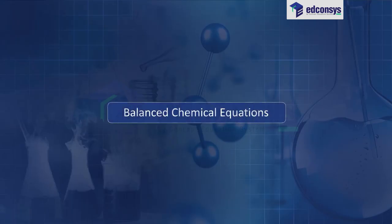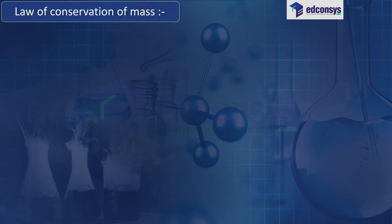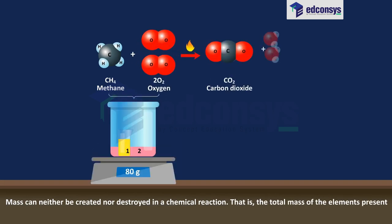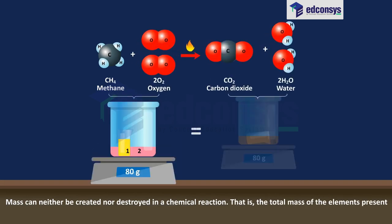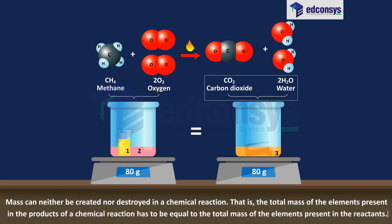Balanced chemical equations follow the law of conservation of mass: mass can neither be created nor destroyed in a chemical reaction. That is, the total mass of the elements present in the products of a chemical reaction has to be equal to the total mass of the elements present in the reactants.